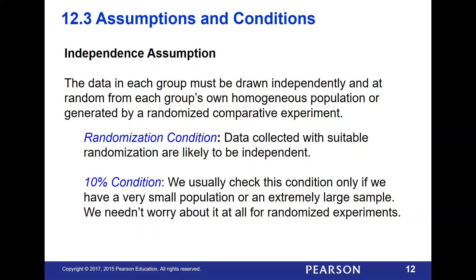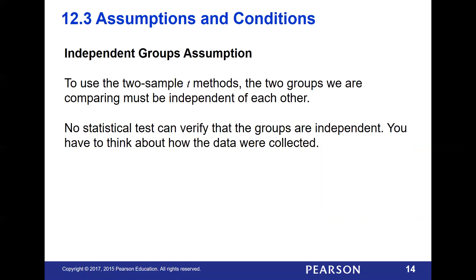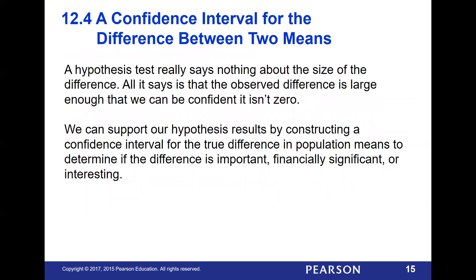The assumptions and conditions required are: randomization, the 10% condition — if sampling without replacement, the sample can't exceed 10% of the population — and the data must look nearly normal, meaning unimodal and basically symmetrical. When using the two-sample t method, the two groups must be independent of each other; changing one cannot change the other. You can't formally test independence, so you have to think about how the data was collected. For instance, if you grab ten people from a refrigerator aisle at the same time, some may be family members and thus not independent.